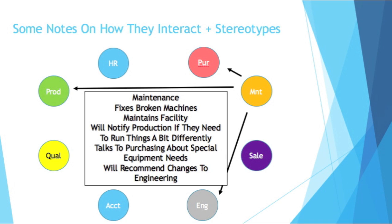Maintenance, of course, fixes broken machines and maintains the facility. They'll notify production if they need to run things a bit differently — for example, if a machine can't go up to its full speed or strength, production needs to know so they can run it differently. They'll talk to purchasing about special equipment needs, and if things break or need updating at high cost, they have to go through purchasing. They will also recommend changes to engineering for future builds — if something breaks a lot, they'll say make it differently next time. In manufacturing, you really want to avoid downtime, and anytime maintenance is involved, there's downtime.